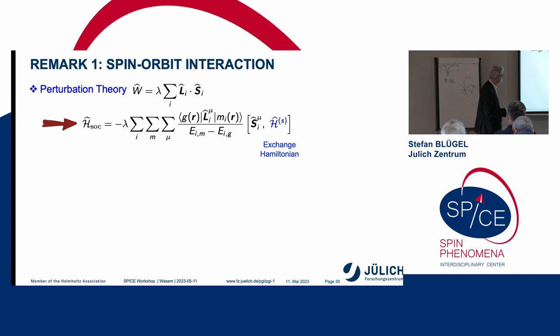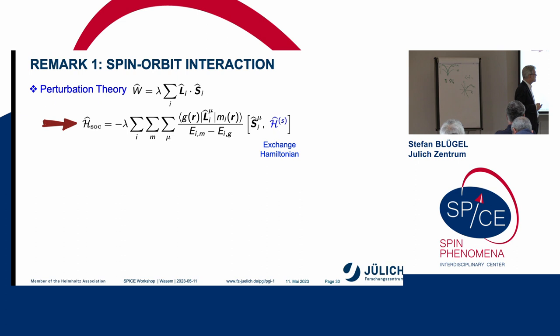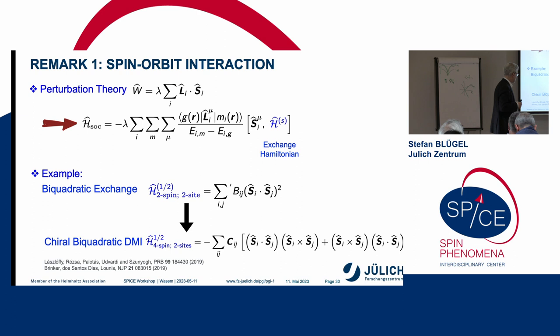So what he did is, he did now, on top of all this what I did, he did a first-order perturbation theory. And in this perturbation theory, he derived a term which is the commutator of a spin operator, and due to the spin orbit interaction, and your exchange operator. So you put in now your exchange operator you like. For example, the bi-quadratic exchange. And what do you get out? The chiral bi-quadratic DMI, which was found in hard work by the Hungarian group, in order to explain a very particular experiment. And everything falls out automatically.